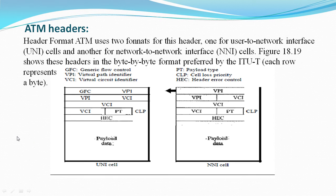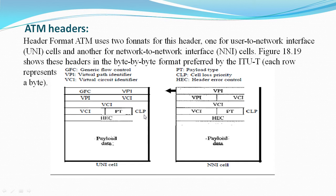The virtual path identifier is an 8-bit field in a UNI cell and a 12-bit field in an NNI cell. The virtual circuit identifier is a 16-bit field in both frames. In the 3-bit payload type field, the first bit defines the payload as user data or managerial information. The interpretation of the last two bits depends on the first bit. The 1-bit CLP field is provided for congestion control; a cell with its CLP bit set to 1 must be retained as long as there are cells with higher CLP. Header error control is a code computed for the first 4 bytes of the header. It is a CRC with a divisor of the equation x to the power 8 plus x to the power 2 plus x plus 1, used to correct single bit errors and a large class of multiple bit errors.